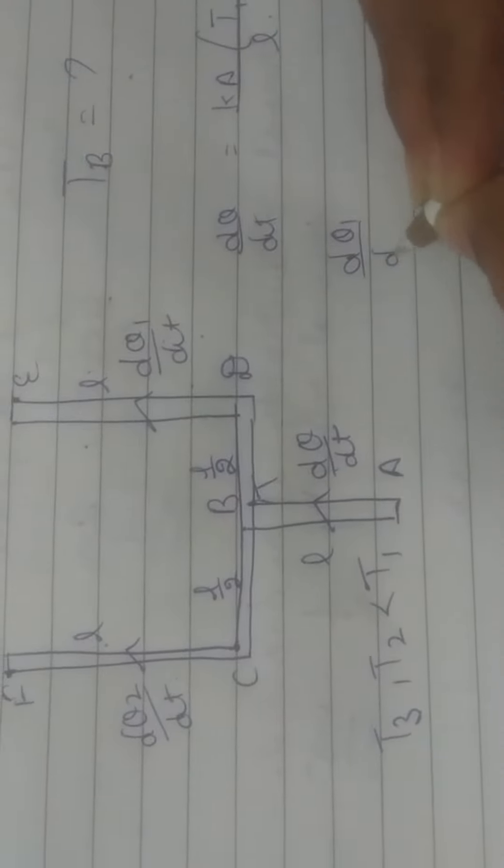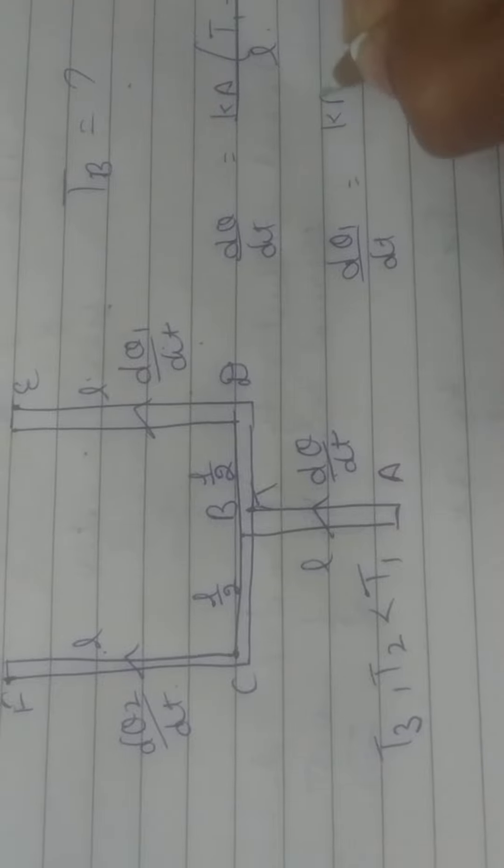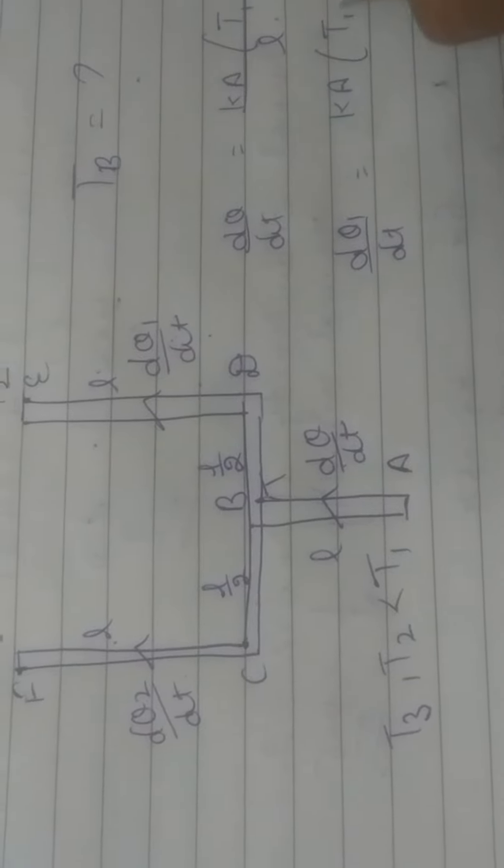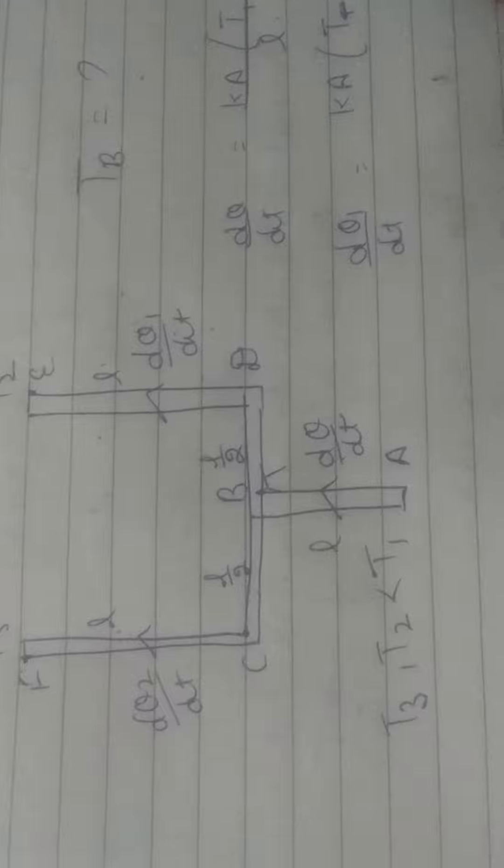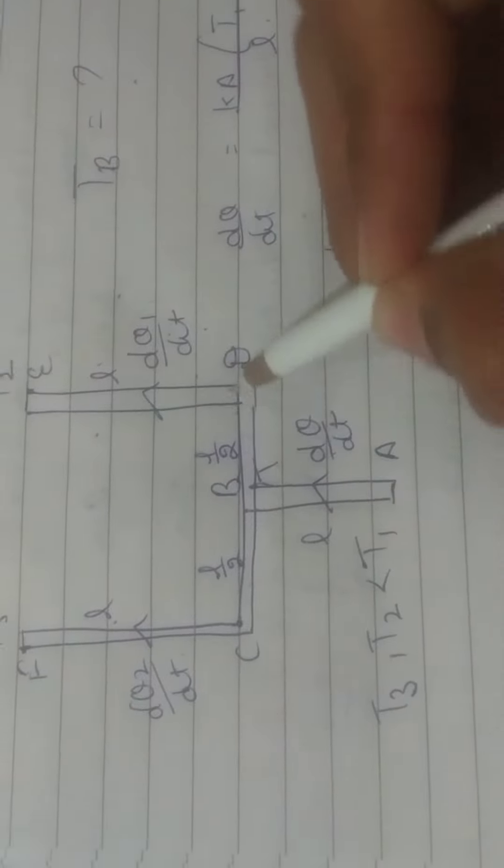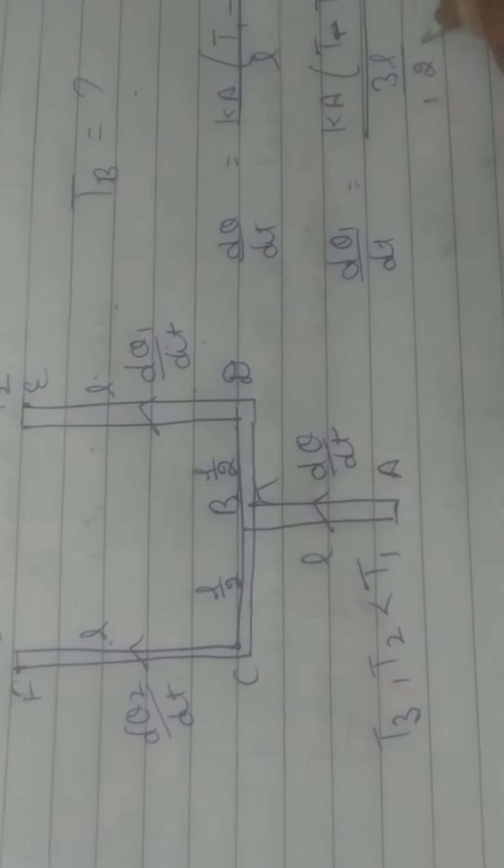DQ1 by DT equals K times A times (T minus T2). The length which is L by 2 and L, which is 3L by 2.